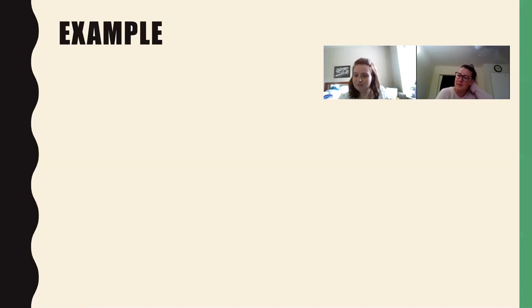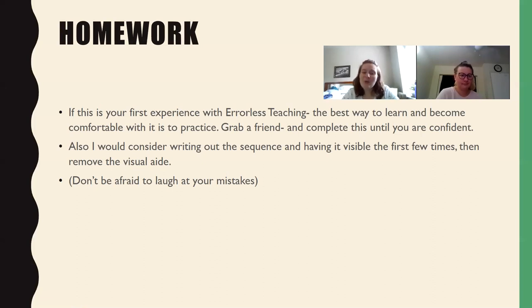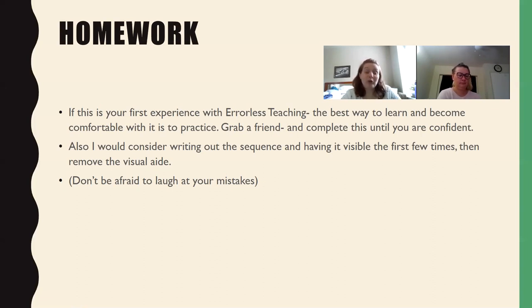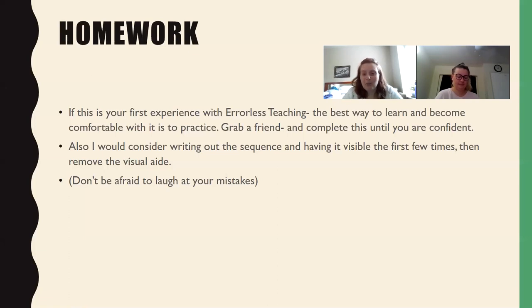The last example with LR from imitation is definitely one we use most often. If you are new to errorless teaching, or if it has been a while, the best way to become comfortable with it is to practice. Grab a friend or a coworker who's willing to do this with you a few times and complete it until you're confident. I remember learning this feeling very jittery — wait, I do this, then this next — so you really just need to practice it. The more you practice, the more it's going to become second nature.